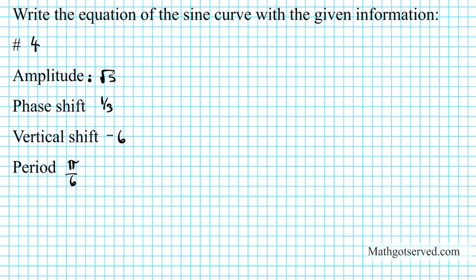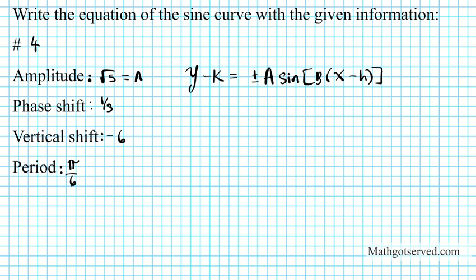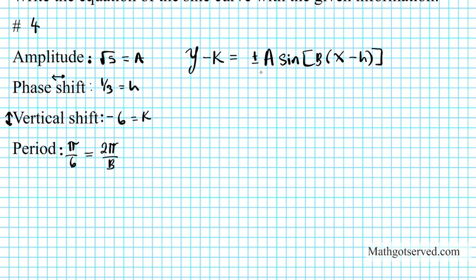Let's consider question number 4. The amplitude is the square root of 5, the phase shift is 1 third, the vertical shift is negative 6, and the period is π over 6. Writing down our transformational form: y minus k equals plus or minus a sine bracket b times x minus h. Amplitude is a, phase shift is h (side to side, the variable next to x), vertical shift is k (up and down, the variable next to y), and the period is 2π over b — that's the technical part.